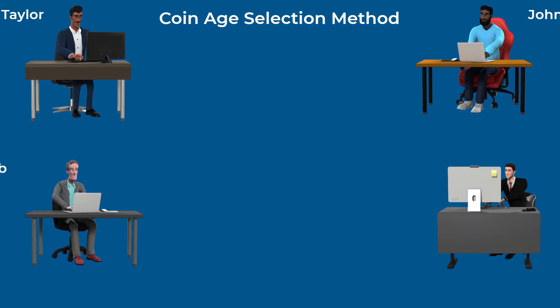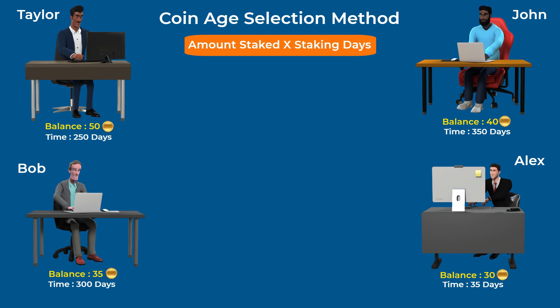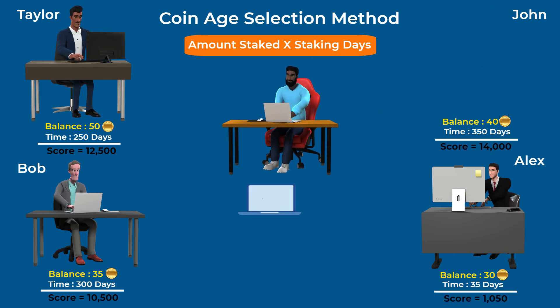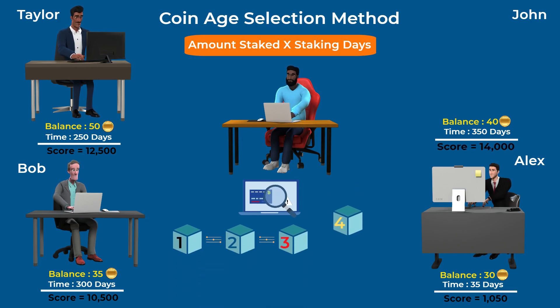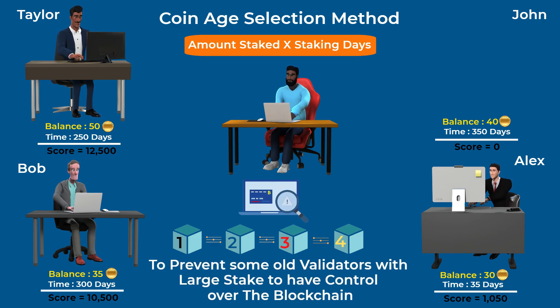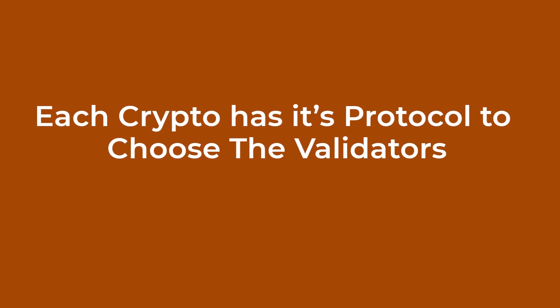Another method for choosing validators is the coin age selection method. This method does not have any randomization in choosing validators. In this system, the amount of crypto staked is multiplied by the number of days those coins have been staked to get the coin age score for each validator. The validator with the highest score is chosen. After he adds the block to the blockchain, his score is reverted to zero, and he needs to wait for a while before raising his score and getting chosen again. This is done to prevent old validators with large stakes from having control of the blockchain and centralizing its decisions. Each cryptocurrency has its own protocol to choose its validators and keep its blockchain secure.